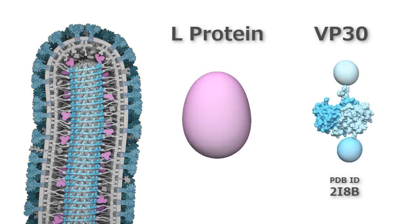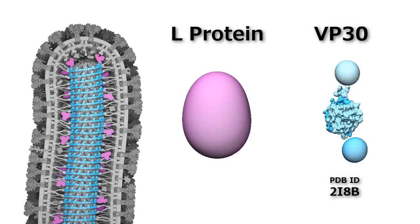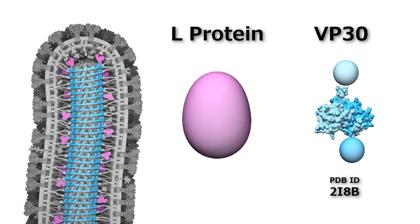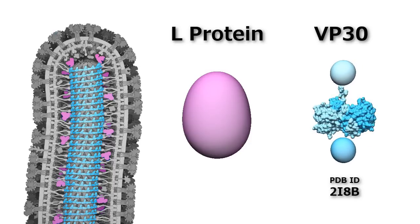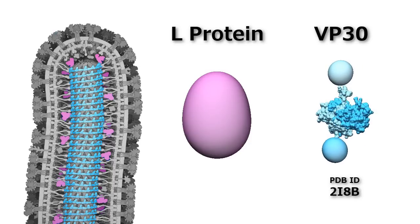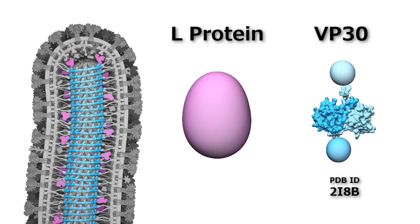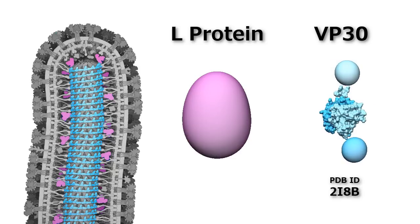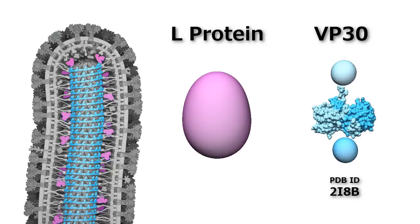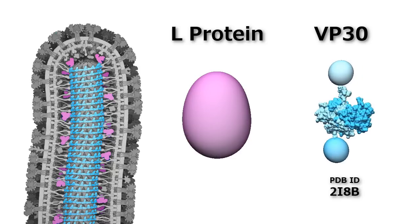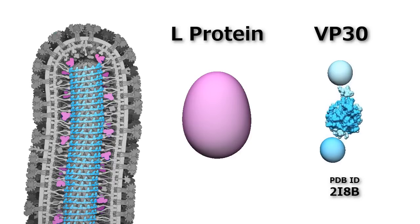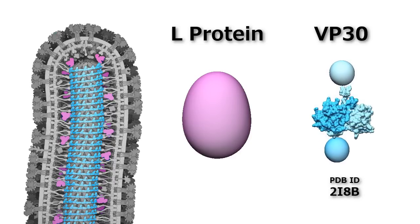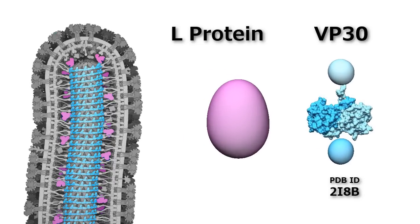The L protein is an RNA polymerase that makes copies of the viral RNA with the assistance of transcription activator VP30. Like many viral polymerases, the L protein is a potential target for antiviral drugs. A structure of the L protein is urgently needed.